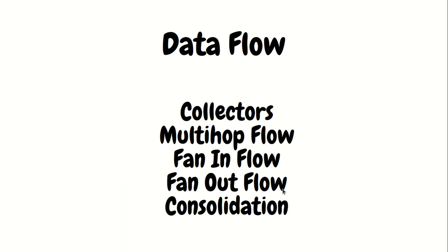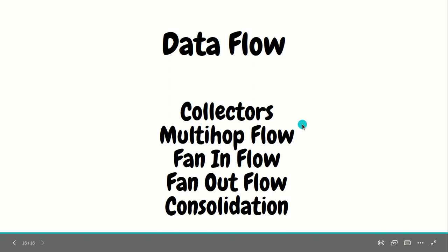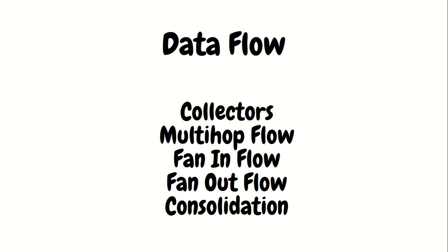Finally, we have data flow concepts. First, we have collectors. A collector is an intermediate node which collects data from multiple agents. What is multi-hop flow? During the data flow, you can have multiple agents on the way. If data is traveling through more than one agent, it's called a multi-hop flow. What is fan-in? Fan-in means multiple sources feeding into a single channel. Fan-out means a single source going to multiple channels — this is where multiplexing and replication come into play. Consolidation means getting data from multiple agents and consolidating it across one agent.